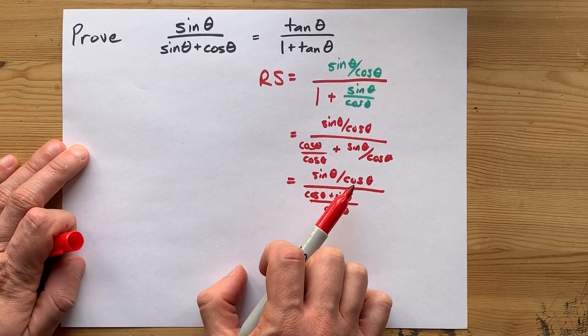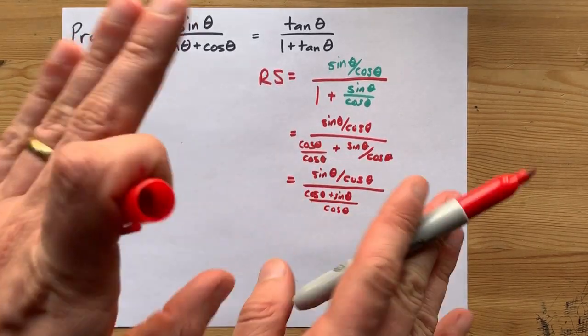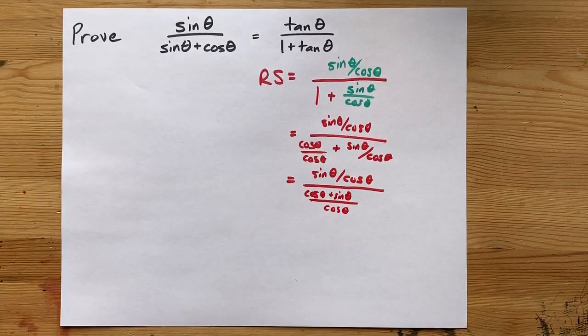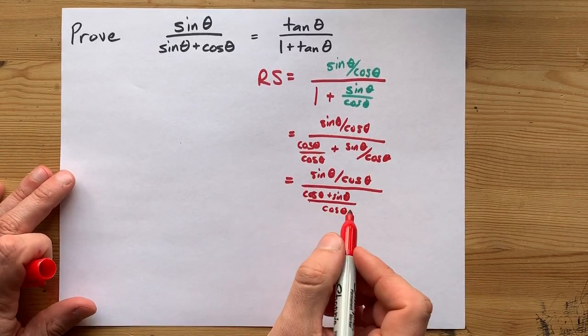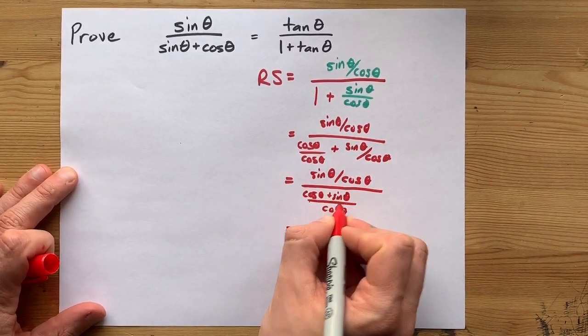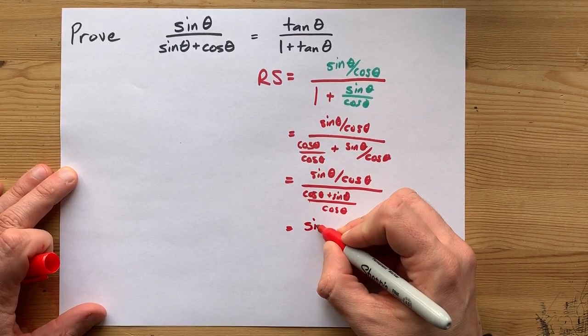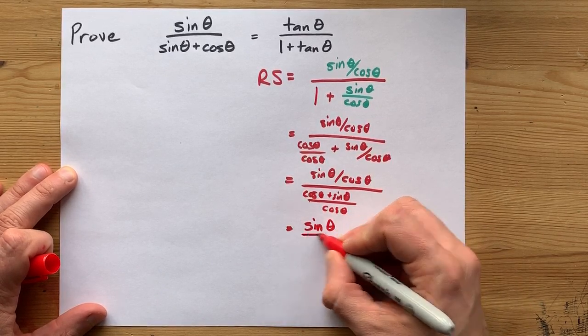Now, this is something over cos divided by something else over cos. The cos is technically cancel here, if you're confident in that, but I'm going to show you that division by a whole fraction like that is the same as multiplying by its reciprocal.